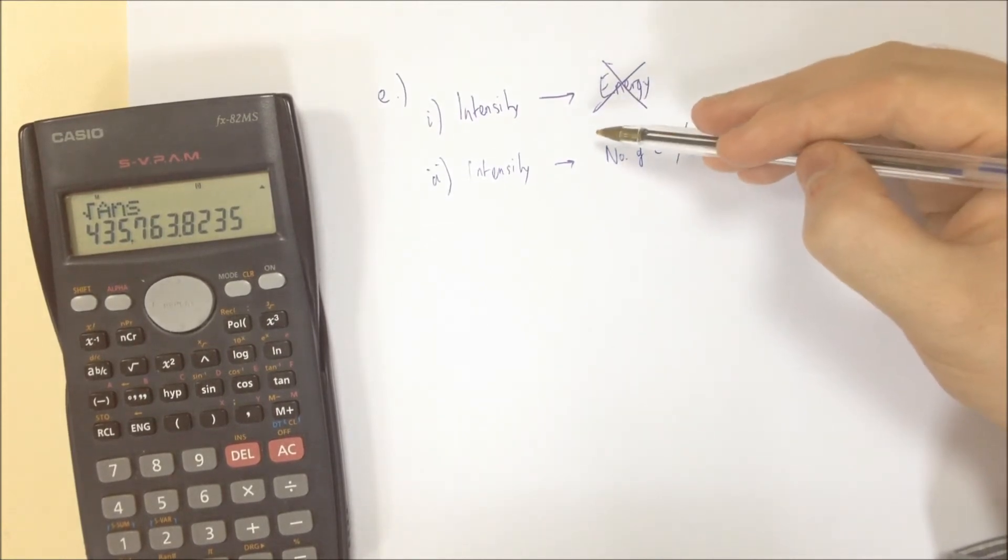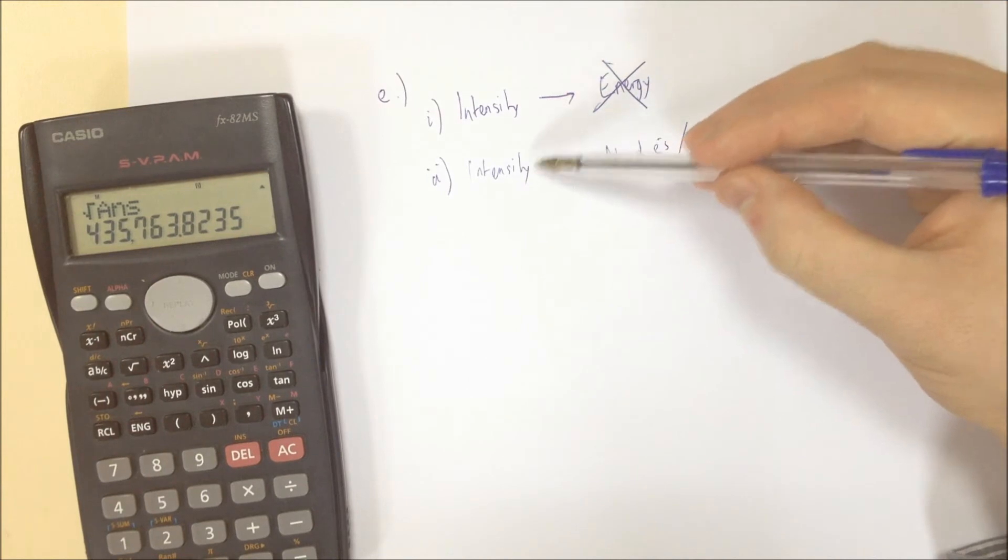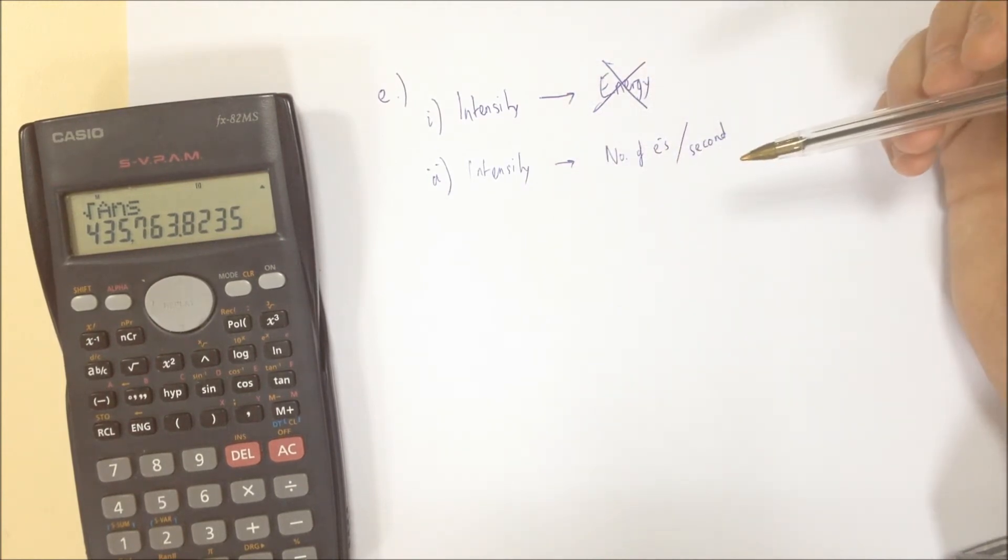Yes, it does. If you have more photons, then you'll have more electrons being liberated. So the intensity going up will increase the number of electrons per second.